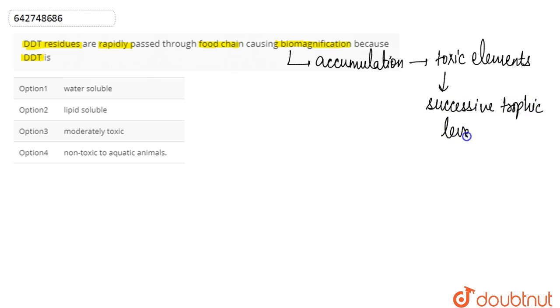What happens is that there is an increase in concentration of the toxic elements at successive trophic level because of their accumulation. This is basically known as biomagnification.